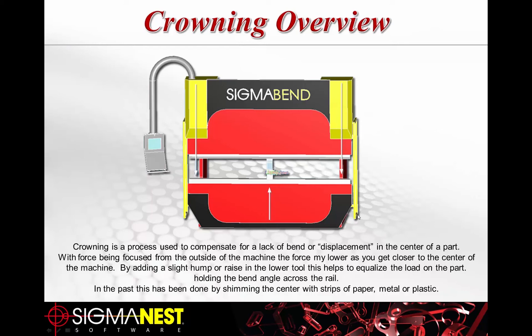Crowning is a lack of bend at the center of the part. With pressure points coming from the outside of the machine toward the center, the edges get bent harder than the center — so you might have a quarter-inch bend at the ends but a half-inch through the center. Crowning raises the center slightly to hold the bend true across the full length. In the past, metal, wood, or paper shims were used; most machines today have automated or adjustable shimming.